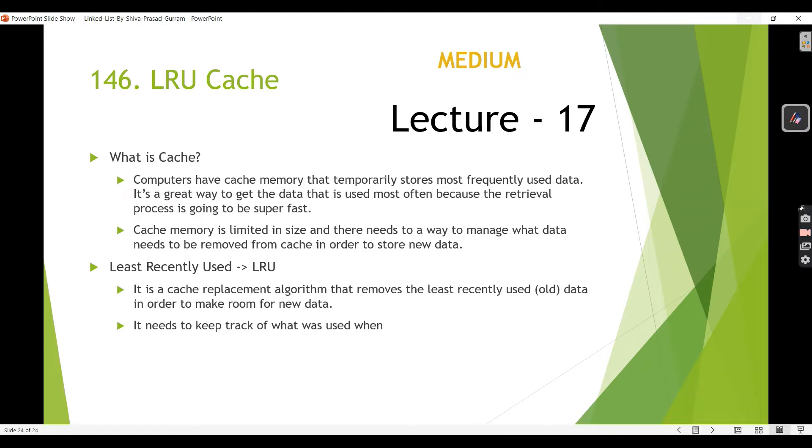A cache is a small memory that temporarily stores most frequently used data in our computer. It's a great way to get the data that is used most often because the retrieval process is going to be super fast. But the limitation is cache memory is limited in size.